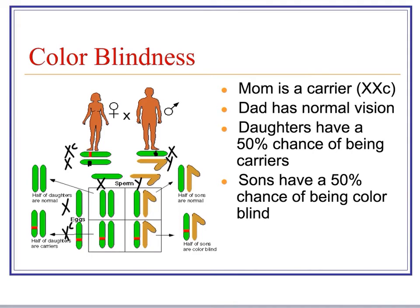If we set up this cross, looking at their daughters — who would have two X chromosomes — half of the daughters would be totally normal, and the other half would have normal vision but be carriers for colorblindness. Looking at the sons, there's a 50% chance they would have normal vision and a 50% chance they would be colorblind. It's important to remember that a colorblind son inherited that trait from his mother, because he inherited his X chromosome from mom and his Y from dad.